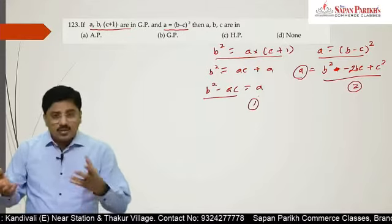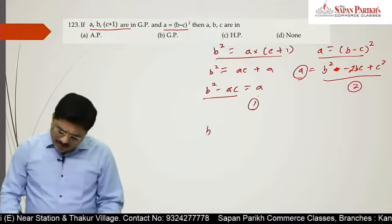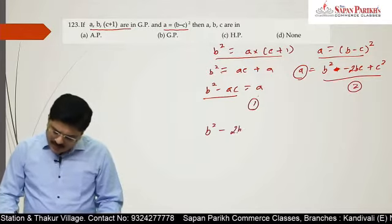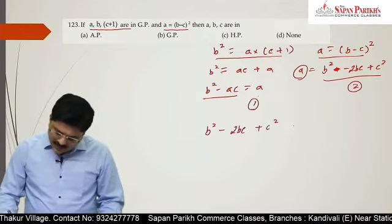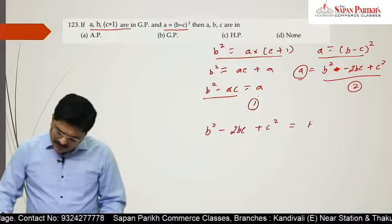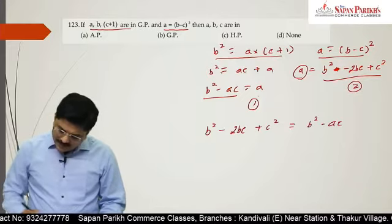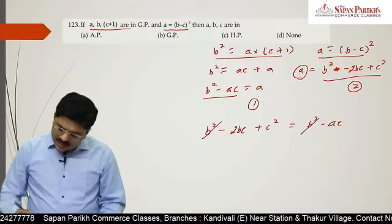If I equate both, I get b² minus 2bc plus c² equals b² minus ac. So this b² and that b² cancel out.